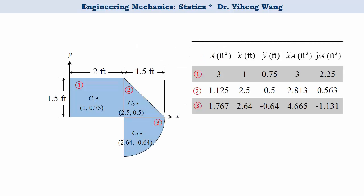It is easier to use a table. For each component area, fill in their respective area, the x-coordinate of their centroid x-tilde, the y-coordinate of their centroid y-tilde. Again, please make sure that they are with respect to the same coordinate system. And then fill in x-tilde times its area, and y-tilde times its area for each of the component areas.